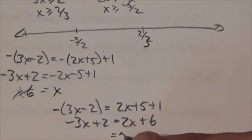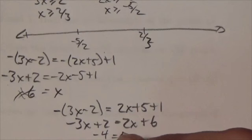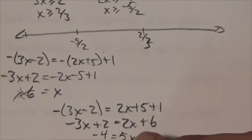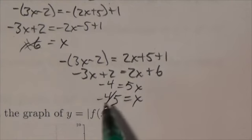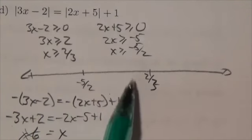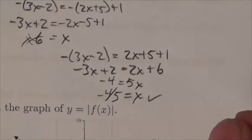So negative 3x plus 2 is going to equal 2x plus 6. I'll bring the 3x over so it becomes 5x. Bring the 6 over, we'll get negative 4. So negative 4 fifths is equal to x. Is negative 4 fifths in the interval between negative 5 halves and 2 thirds? Yes. So that is an acceptable solution.